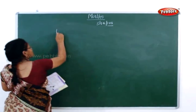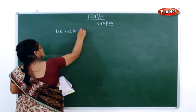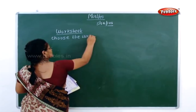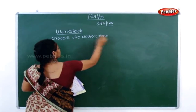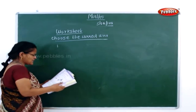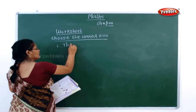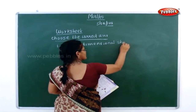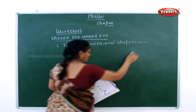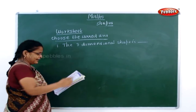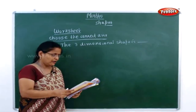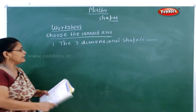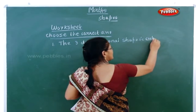Next is your worksheet. First, choose the correct answer. The three-dimensional shape is dash. The options are square, rectangle, triangle and cuboid. Can you tell me which is a three-dimensional shape? It is the cuboid - it is a three-dimensional shape.